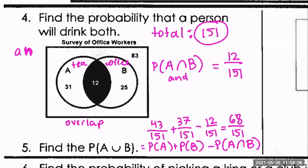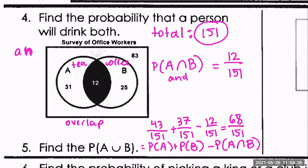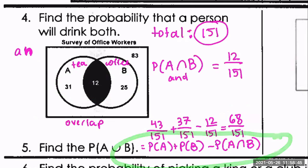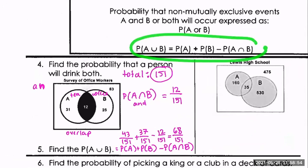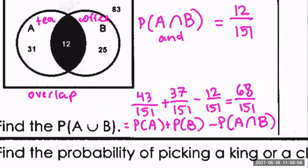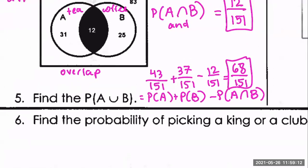Someone in the last class went straight to the Venn diagram and just added the three individual sections together — 31 + 12 + 25 = 68 — and put it over 151. Does that give the same result? Yes — 68/151. So that's the shortcut when looking at a Venn diagram: just add the three separate sections. The formula P(A) + P(B) − P(A ∩ B) is useful for cases like the next example, where you don't have a Venn diagram.